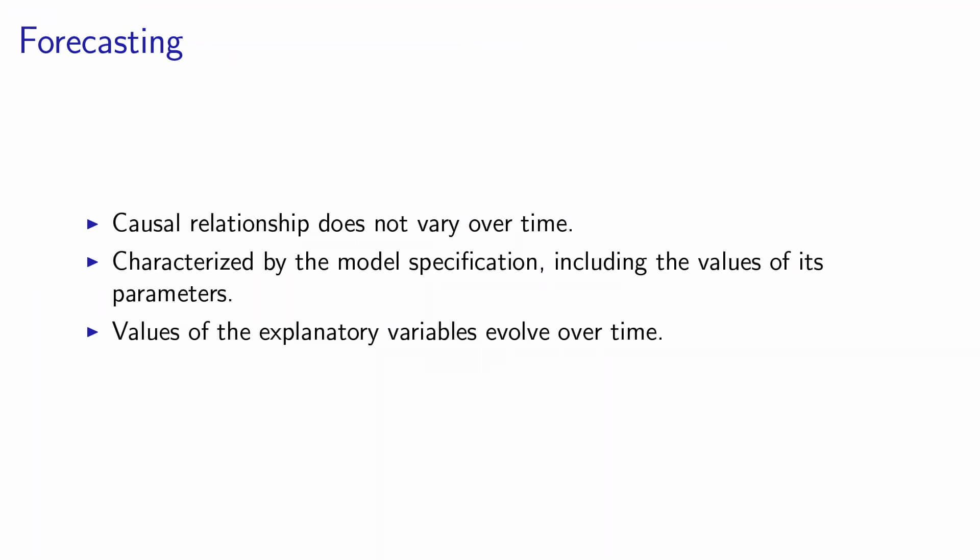When we do forecasting, we assume that something does not change. In this context, we assume that the causal relationship between the variables — age and ownership of an electric car — does not vary over time. This causal relationship is captured by the model specification, including the value of its parameters. This does not vary over time. But of course, the values of the explanatory variables, like age in this case, vary over time. And because we have this stable causal relationship, we can predict the future values of the dependent variable using the model, as we did in this example.